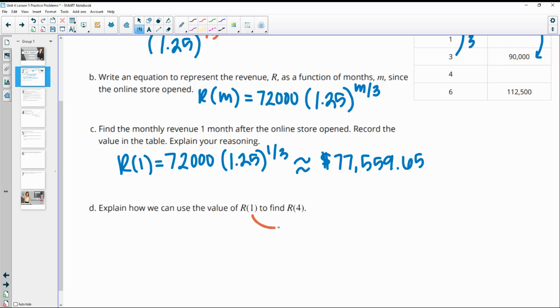So remember that we know that the growth factor for a three-month period is 1.25. So from month one to month four, this is going to grow by a factor of 1.25. So we could just simply take this number right here and multiply it by 1.25 since we want to figure out three months later.